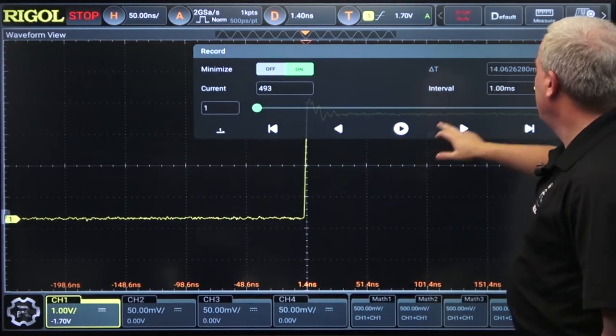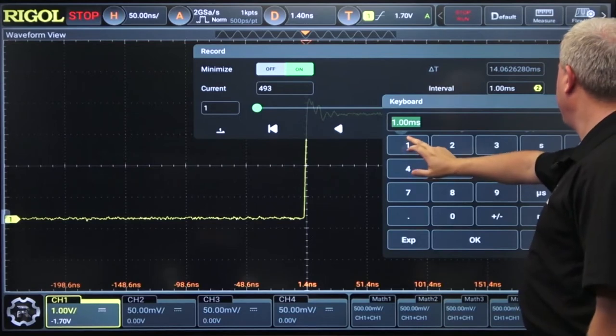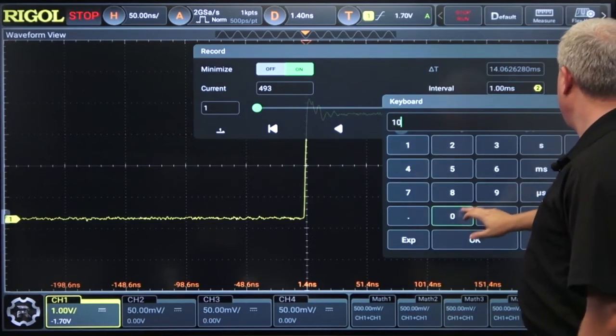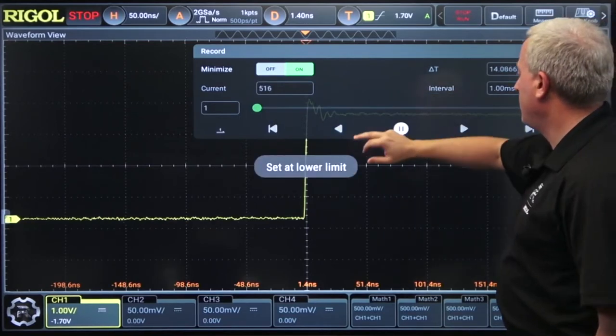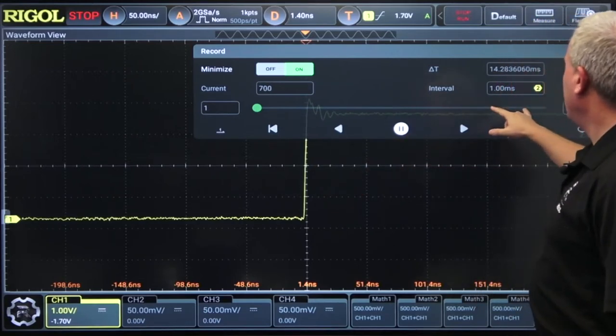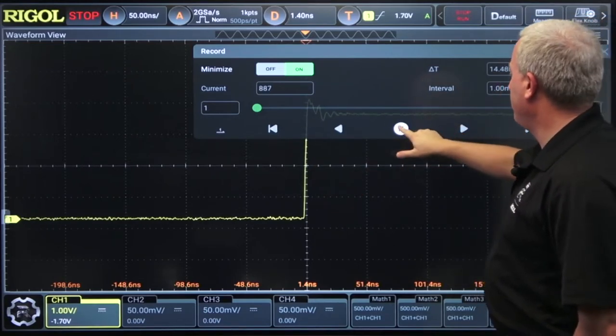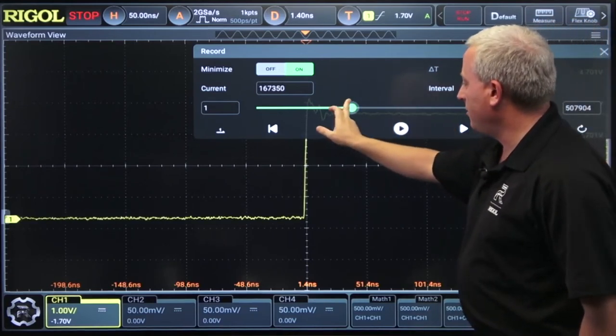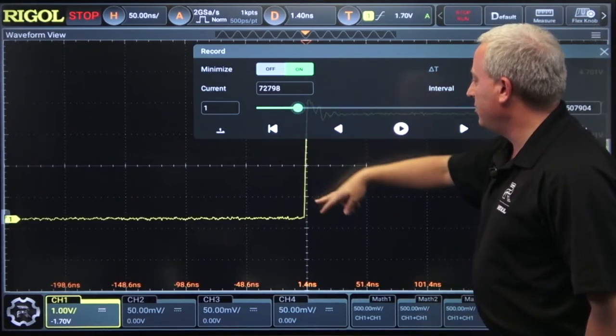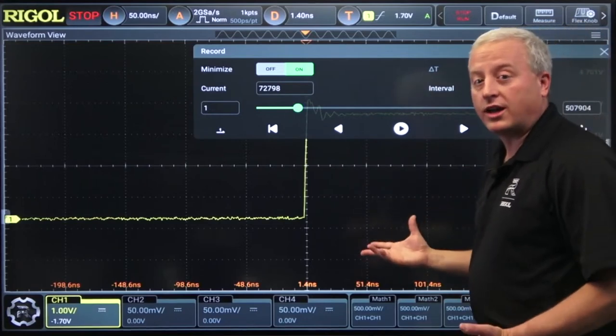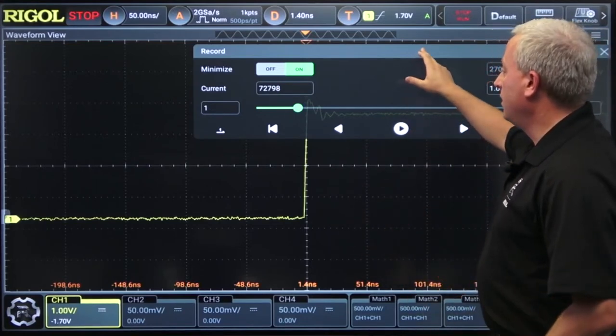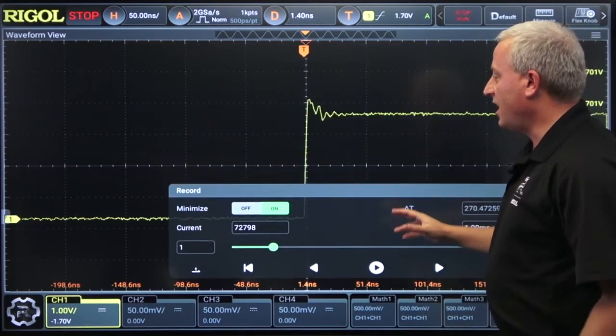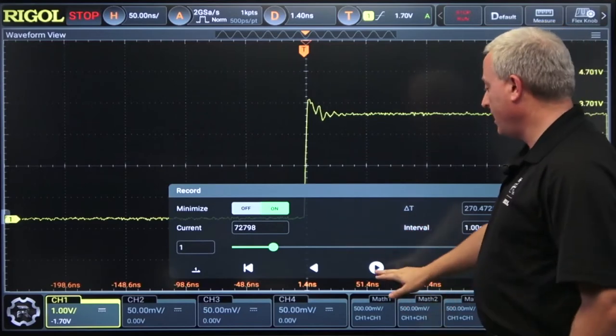Look at them in series. We can speed that up. So we're going at really a frame per millisecond here. We can skim through all these frames looking at different data sequences within that capture. So a great way to look at pieces of those trigger events in the context of each other in a series like a movie.